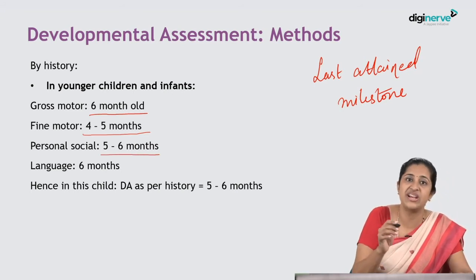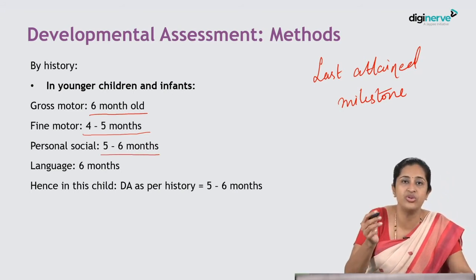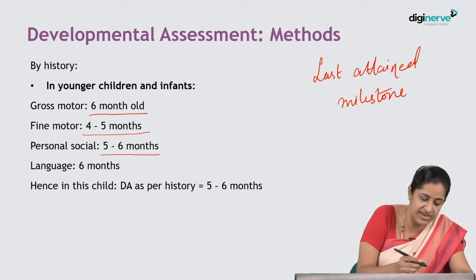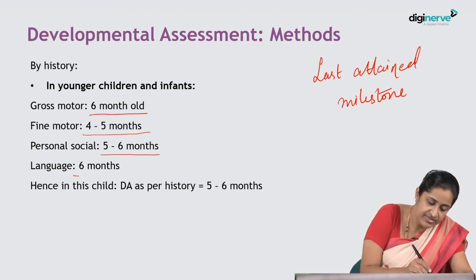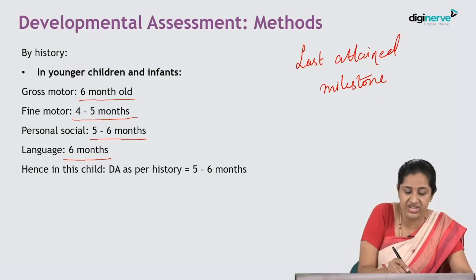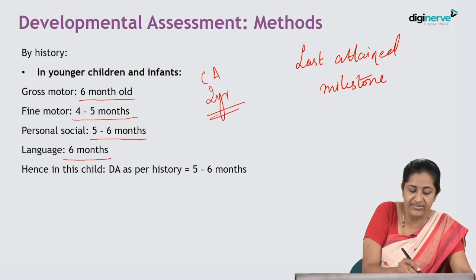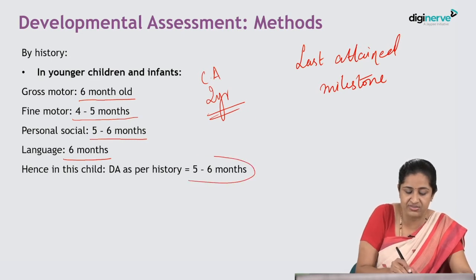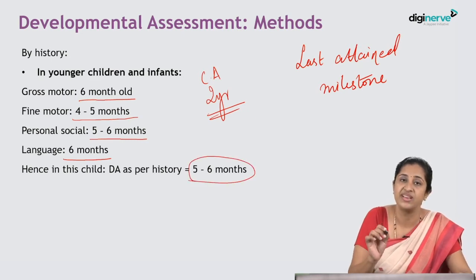In the language domain, the child is saying few words and monosyllabic speech, so language is also at six months. This is how you calculate the developmental age of the child in each of the domains. Chronologically the child is two years old, whereas the developmental age is five to six months as per history.